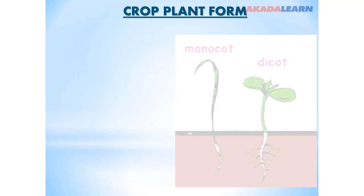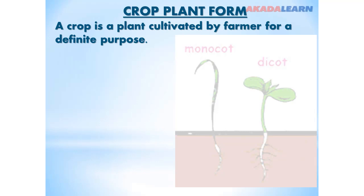Crop plant form. A crop is a plant cultivated by a farmer for a definite purpose — this is one of the differences between a crop and a plant. Any living thing can be a plant, but a crop is deliberately cultivated by a farmer for a definite purpose.